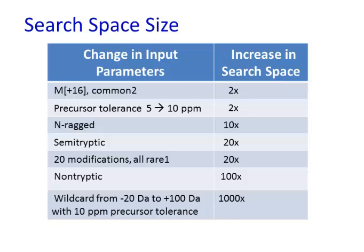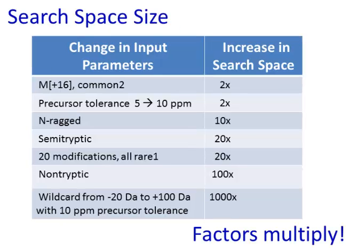While Byonic is running, let's discuss how input parameters affect the search space size — that is, the number of peptide forms considered by Byonic. Each residue-mass pair, such as oxidized methionine, approximately doubles the search space. Doubling the precursor mass tolerance also doubles the search space. An important thing to remember is that the factors multiply. Enabling 10 modifications and making them all common could expand the search space by a factor of two to the tenth, but making them all rare one expands the search space by only about a factor of ten.